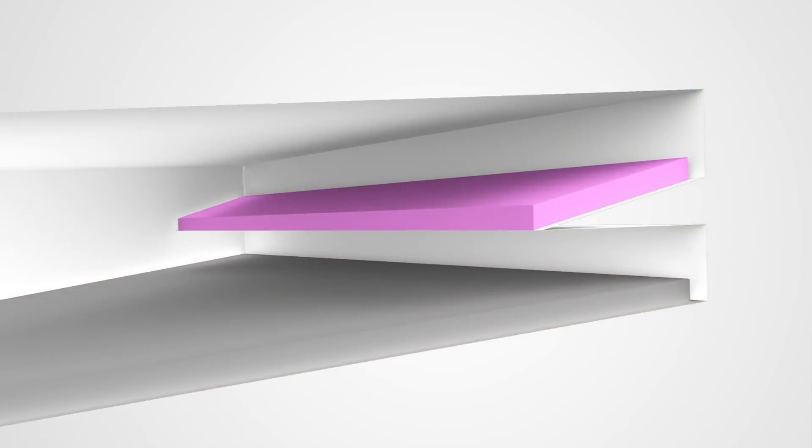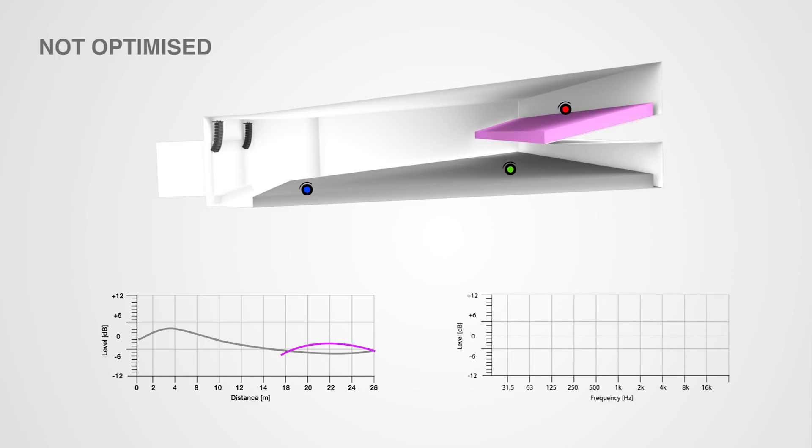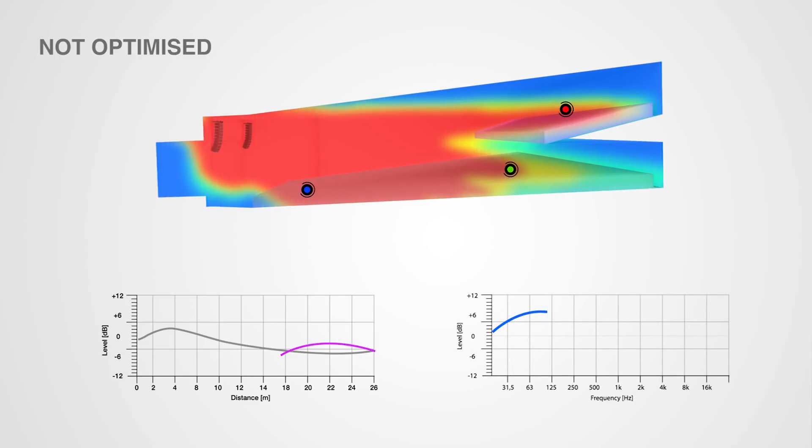Here is an example of the typical behavior of a line array system. Having set the height and splay angles of the cabinets, variations in the SPL with distance and differences in tonal balance from front to rear are perceivable.